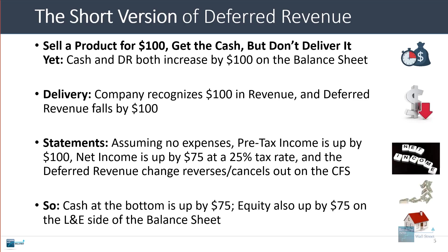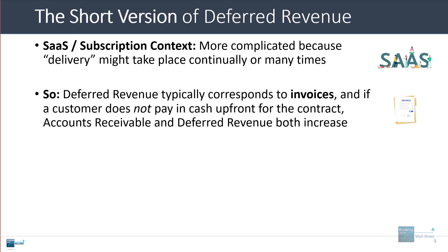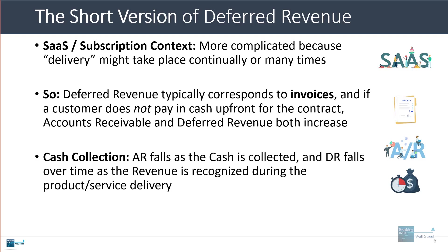That's a very simple case and a pretty common interview question. In a subscription context, this gets more complicated because the delivery is not necessarily a one-time thing — it might take place continually or multiple times over the course of a month, quarter, or year. In a subscription context, deferred revenue typically corresponds to invoices and billing dates. If a customer does not pay in cash upfront for an entire contract, then accounts receivable and deferred revenue both increase at the same time and offset each other so that the balance sheet remains in balance. When cash is actually collected, AR falls. Deferred revenue keeps falling over time as more revenue is recognized.